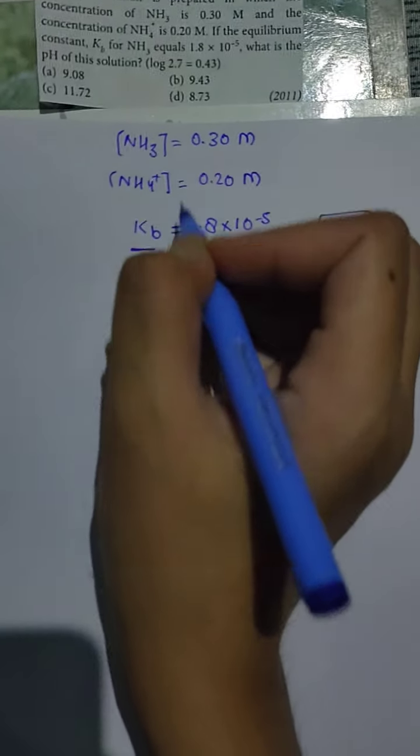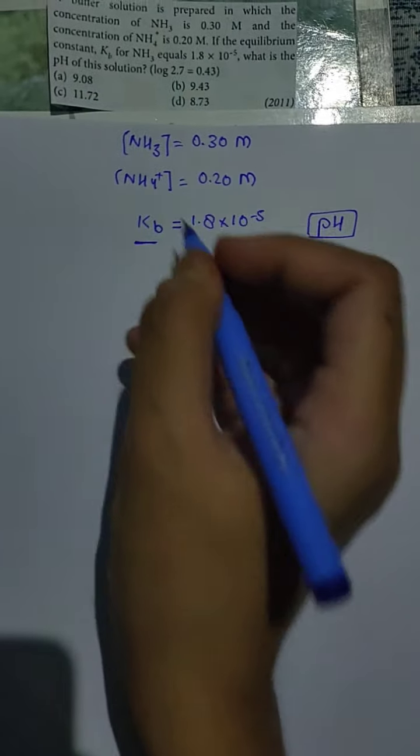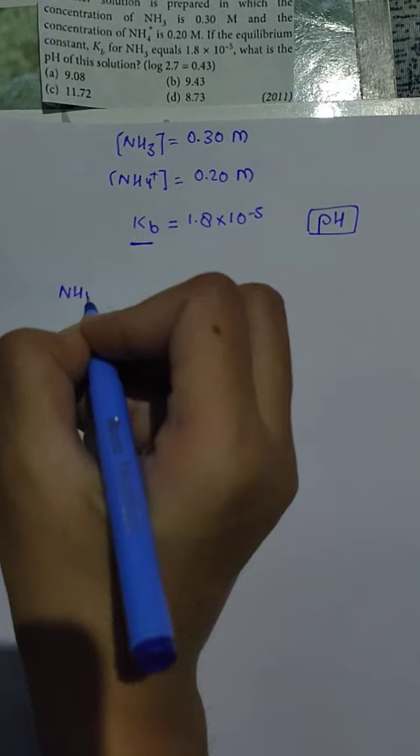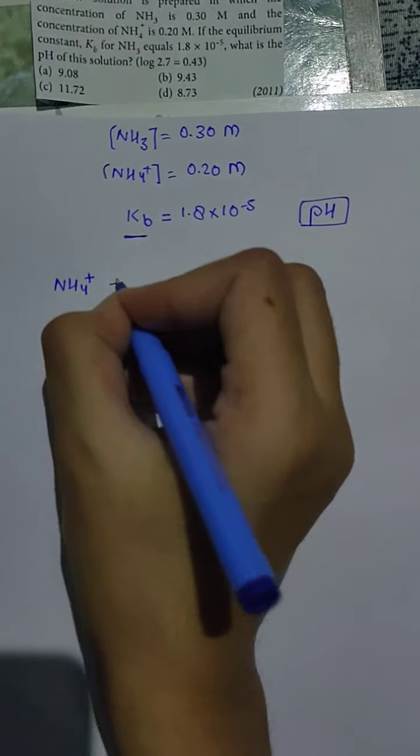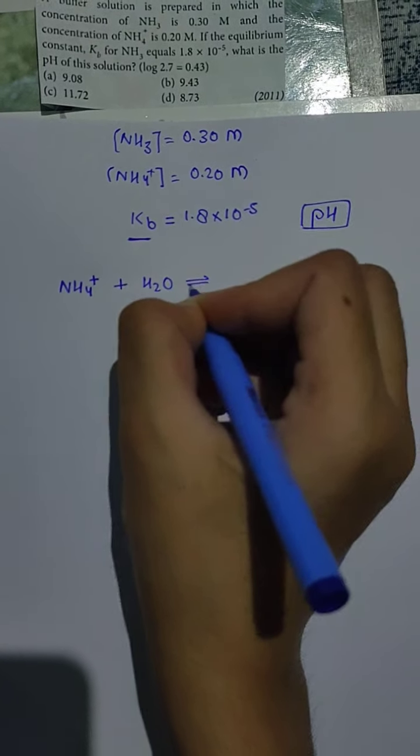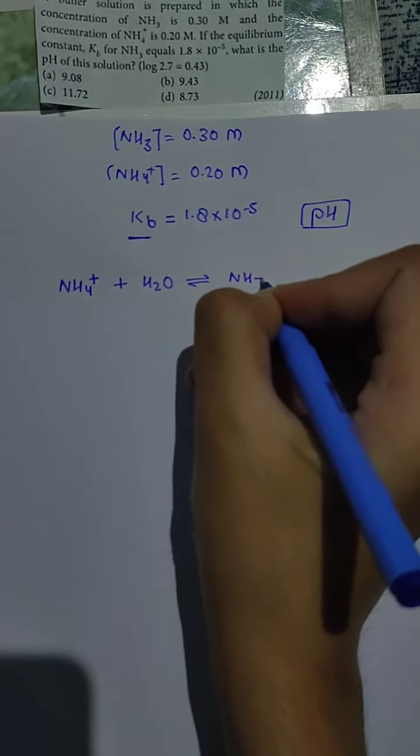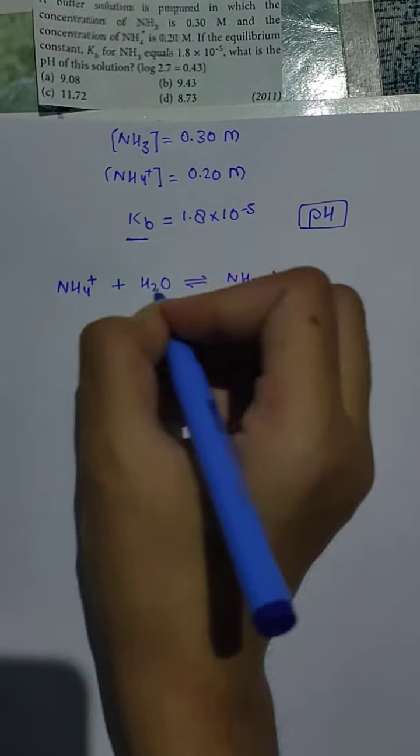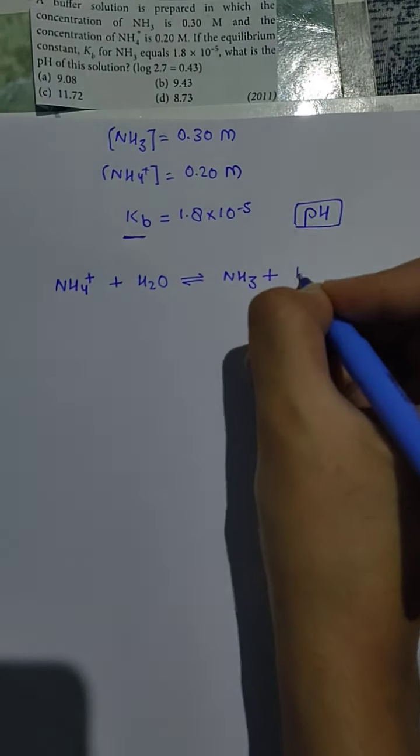Clearly, here is Kb's value, so this will be a basic buffer. Here is NH4+, the base undergoes water addition, forming NH3. It will be released from the proton, so we get H3O+. This is the reaction.